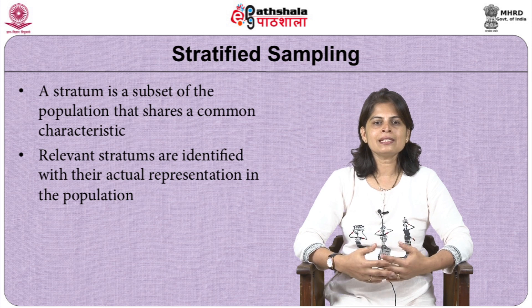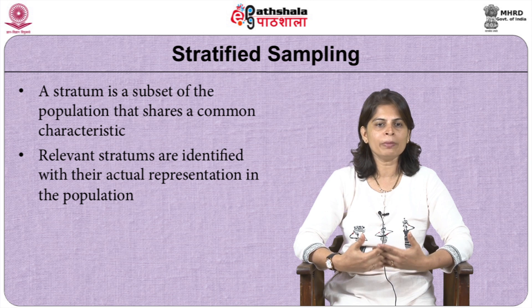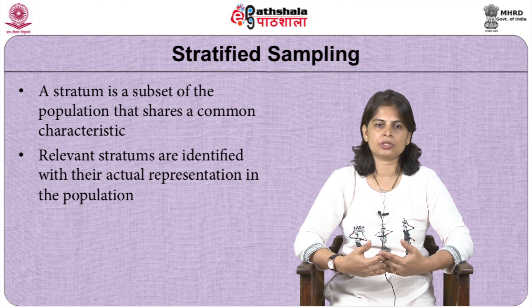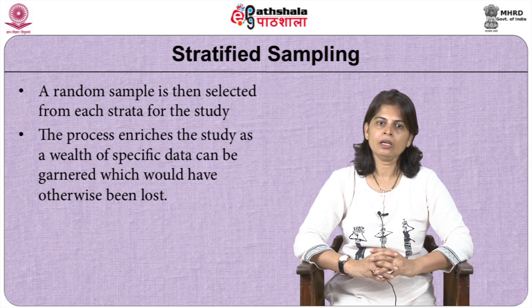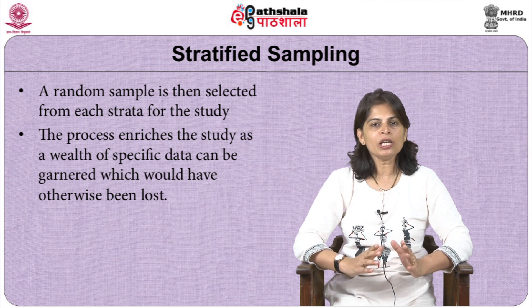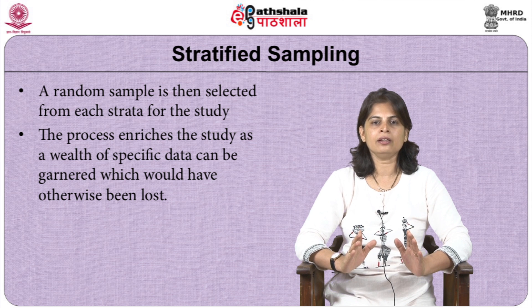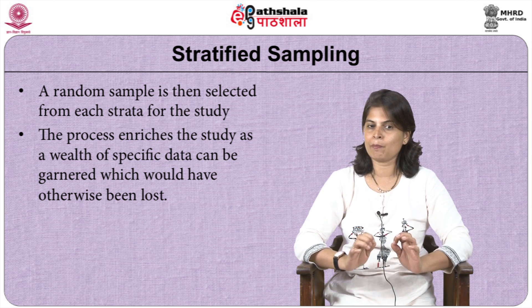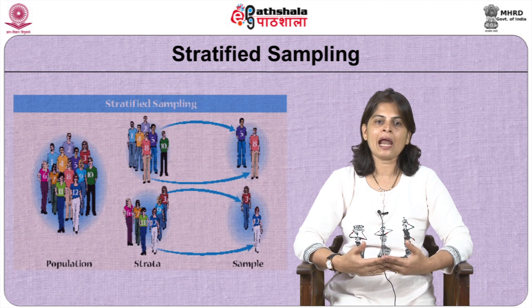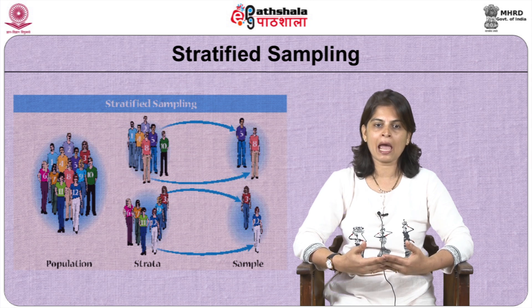Let us come to stratified sampling. Stratified sampling is a commonly used probability method that is superior to random sampling because it reduces the sampling error. A stratum is a subset of a population that shares a common characteristic. Relevant strata are identified with actual representation in the population, and a random sample is then selected from each stratum. When a population is divided into distinct independent strata, a wealth of specific data can be garnered, enabling researchers to draw inferences about specific subgroups, enriching the study and preventing important data from getting lost.